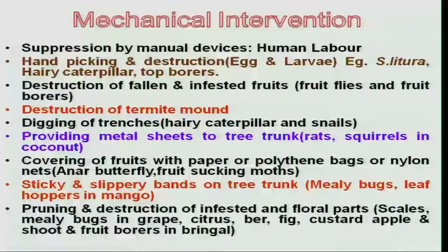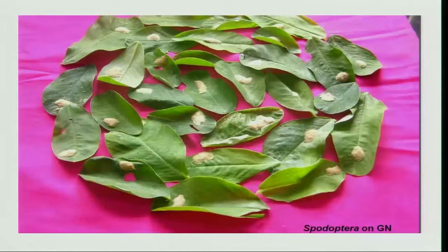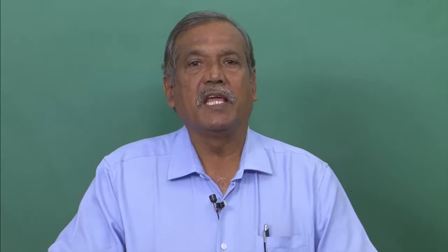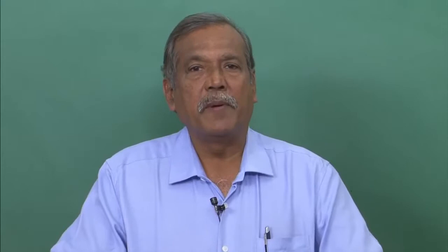One of the foremost and simple technologies is hand picking and destruction. This is a simple technique of taking out the egg stages or the larval stages of important pests like Spodoptera or hairy caterpillars. The photograph indicates that in the case of groundnut, Spodoptera egg masses are laid by the female adult on the upper surface of the leaf in masses and groups. Each egg mass will have about 200 to 300 eggs, and because they can be located easily in the field, they can be picked and destroyed manually.